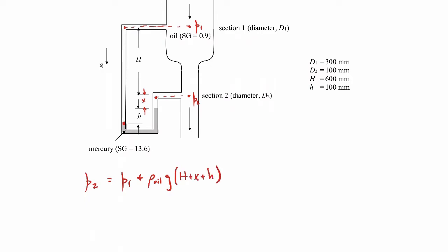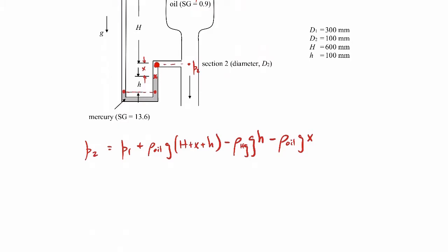We don't know what x is, but as you'll find in a moment it won't matter. We then move horizontally in the mercury to the other side, then upward through mercury over distance little h — subtracting rho_mercury times g times little h — and then upward through oil over distance x, subtracting rho_oil times g times x. That gives us pressure p2. The x terms cancel out.